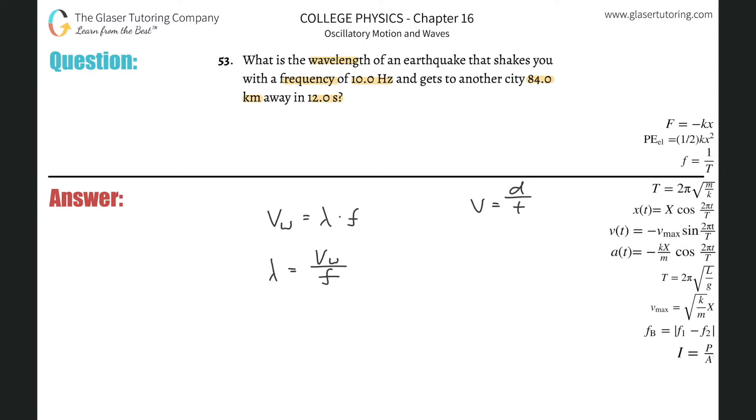You've got to have consistent units here. So basically, we know that the velocity is the distance. We need it in meters. They gave it to us in kilometers. Multiply that by 1,000. That's simple. 84,000 divided by the time in seconds. That's going to be 12.